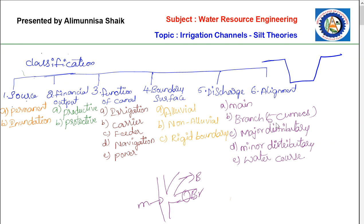The major distributory is also called rajba. Its discharge is less than that of branch canals — while branch canals carry over 5 cumecs, the major distributory carries around 1/4 to 5 cumecs. These are real irrigation channels in the sense that they supply water for irrigation to the fields through outlets provided along them.